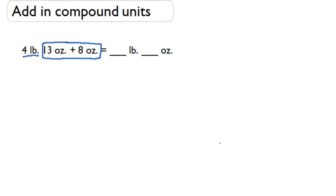Here we're going to just ignore our 4 pounds for right now, and we're going to add 13 ounces plus 8 ounces. Now since they have the same unit, we can just add our numbers 13 plus 8. We're going to end up with 21. Now we have 21 ounces.